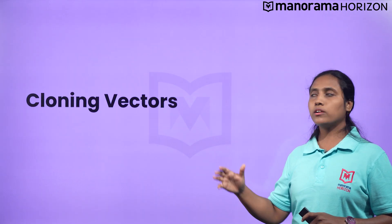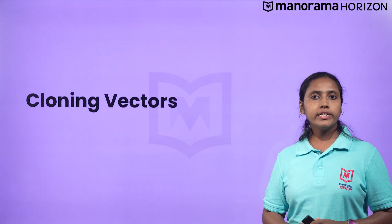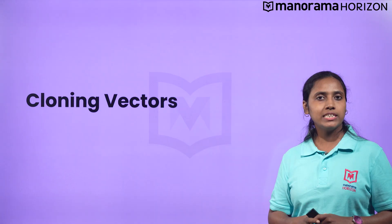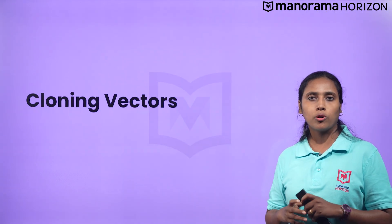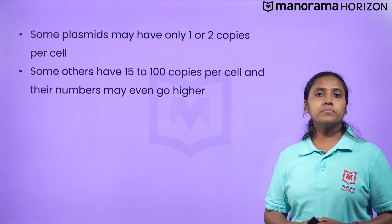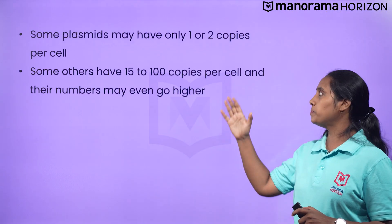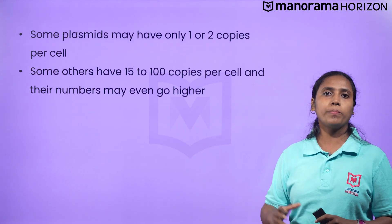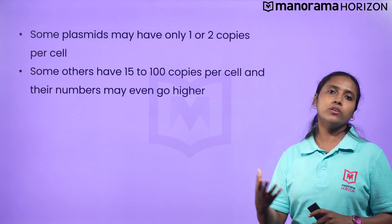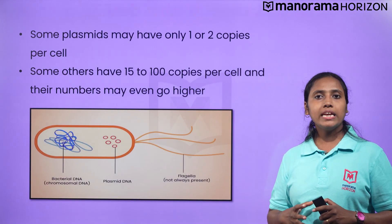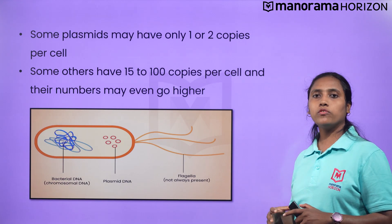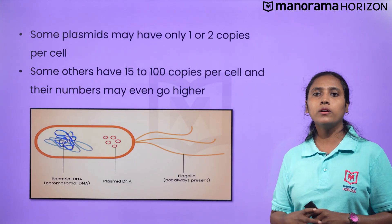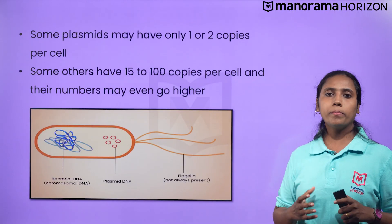What are cloning vectors? Plasmids and bacteriophage can replicate within bacterial cells independent of the chromosomal DNA. Some plasmids may have only 1 or 2 copies per cell, while others have 15 to 100 copies per cell and the numbers may even go higher. If we can link an alien piece of DNA with bacteriophage or plasmid DNA, we can multiply its numbers equal to the copy number of the plasmid or bacteriophage.